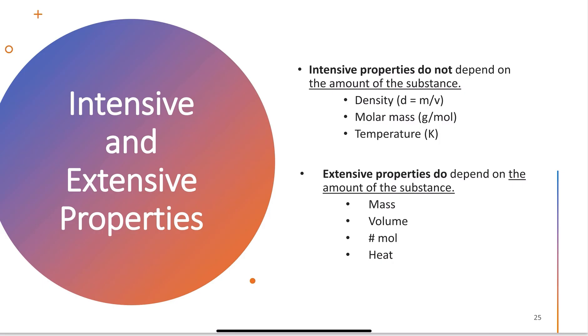What are intensive and extensive properties? These are things that are always kind of in the back of our mind, like the law of conservation of mass — it's always behind there, but we're not actively talking about it all the time.